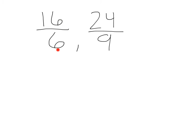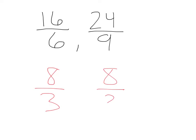How about 16/6 and 24/9? Let's simplify 16/6 first. 2 can go into 16 eight times, and 2 can go into 6 three times, so that simplifies to 8/3. What about 24/9? 3 can go into 24 eight times, and 3 can go into 9 three times, and these are equal. So yes, they form a proportion. Remember, when you're simplifying these — just like simplifying fractions — see what can go into the numerator and the denominator, and then divide it out to simplify.